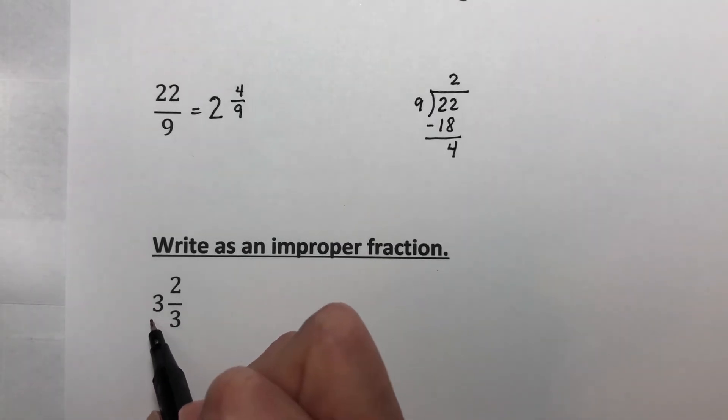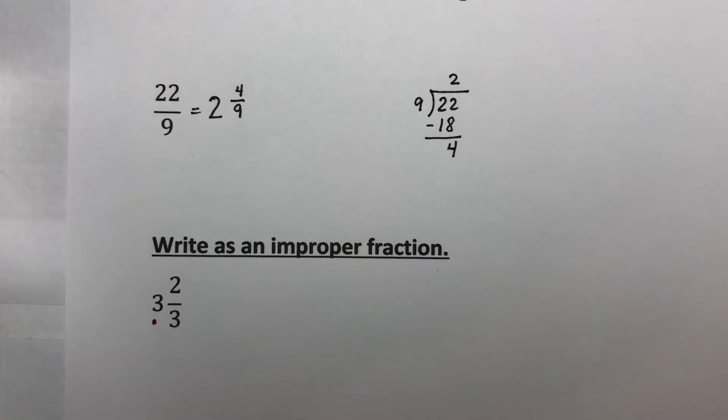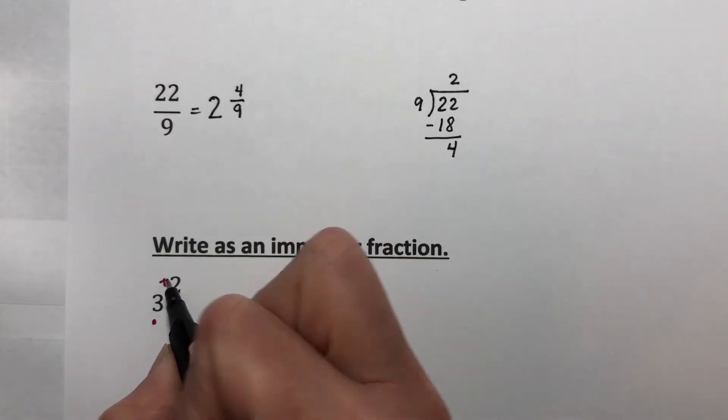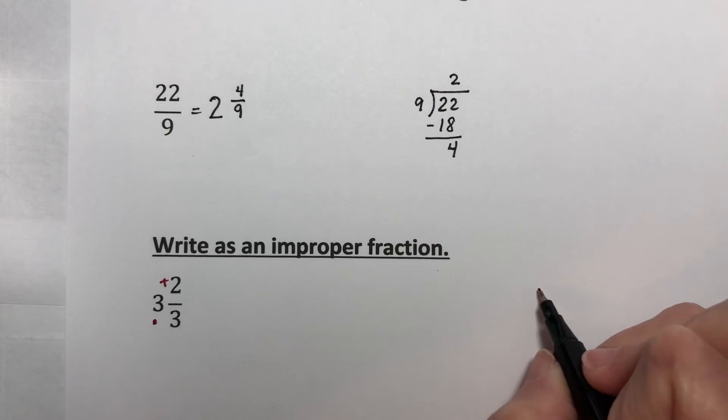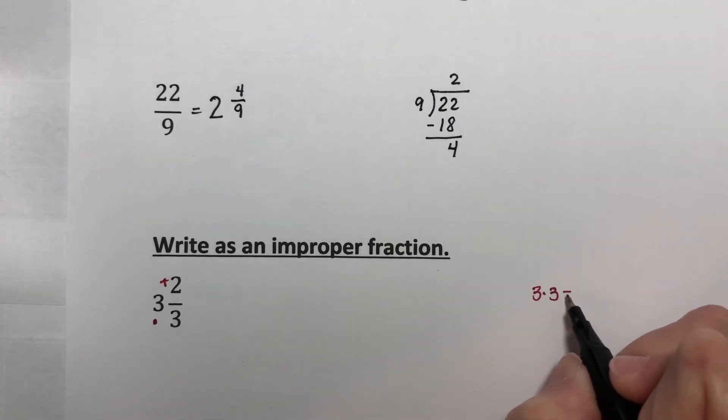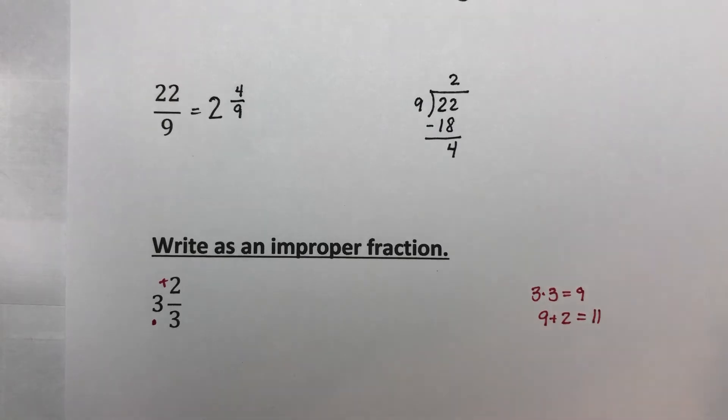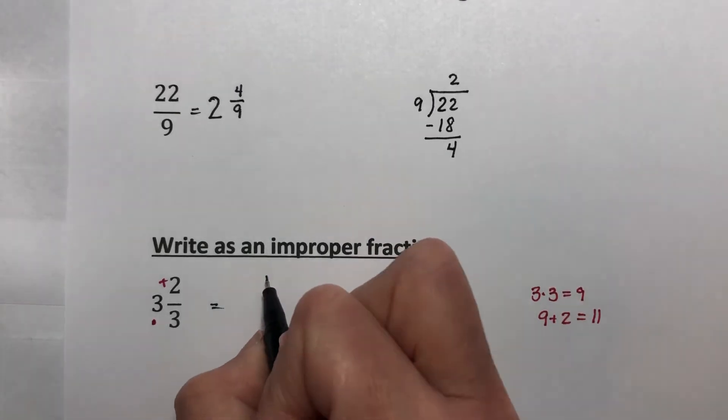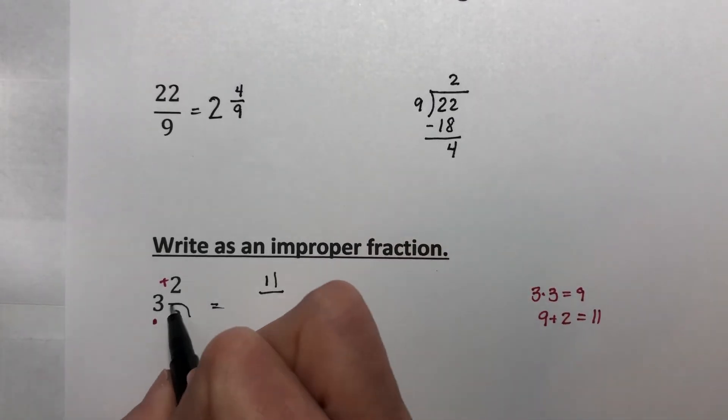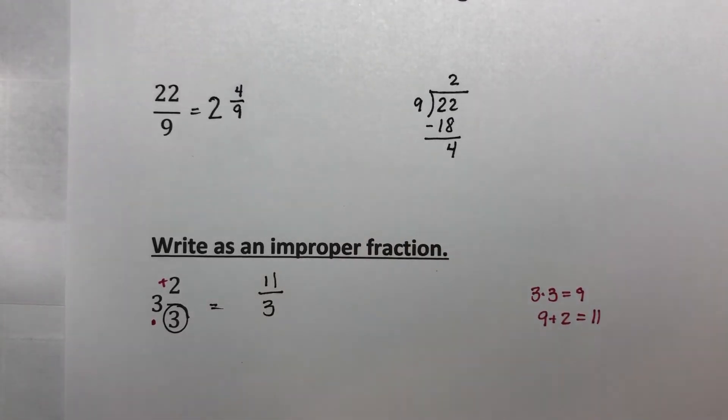What you're going to do is it kind of makes a circle. You're going to do 3 times 3, and we use a dot now for multiplication, not an x because an x in algebra causes big problems. So 3 times 3 plus 2. I'm coming over here to scratch paper. 3 times 3 is 9. 9 plus 2 is 11. So we take this value, 11, over whatever this is, thirds. So this is 11 thirds.